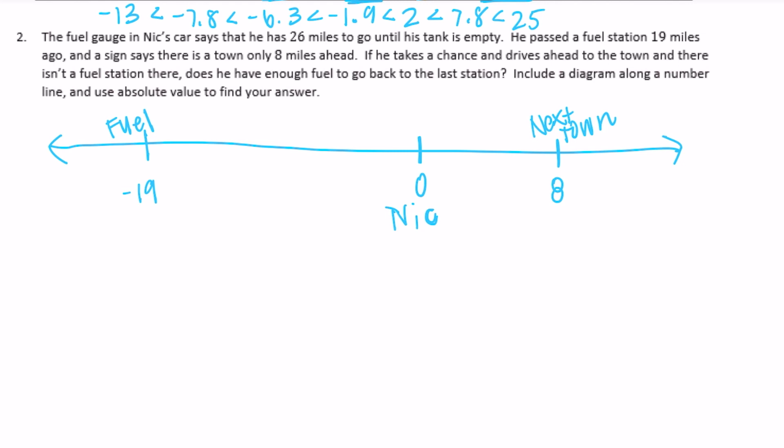So if he takes a chance and drives ahead to the town, so let's say he decides to drive to the town, and there isn't a fuel station there, will he have enough to drive all the way then back to the last exit where there was a fuel station? So basically, we want to know,